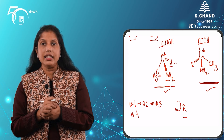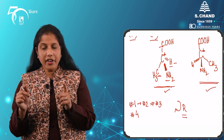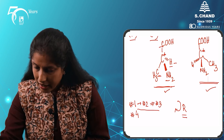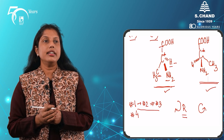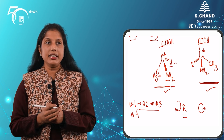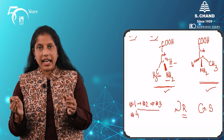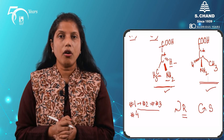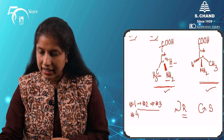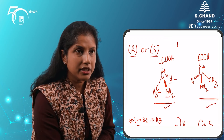Once we have done this, we will trace the path from priority 1 to priority 2 to priority 3. If our movement is in a clockwise direction, then that particular enantiomer is going to be designated as R — in Latin, rectus, which means 'upright.' If however we are moving in a counter-clockwise direction, then that particular enantiomer is going to be designated as S — which in Latin means sinister, meaning 'left.'